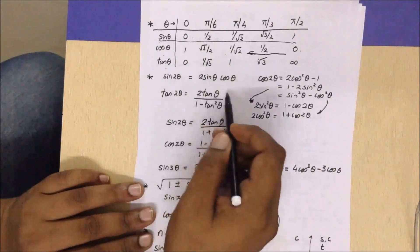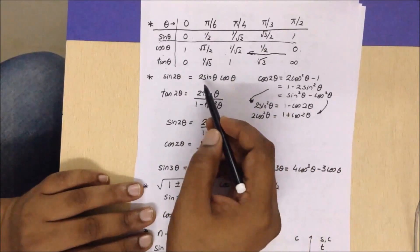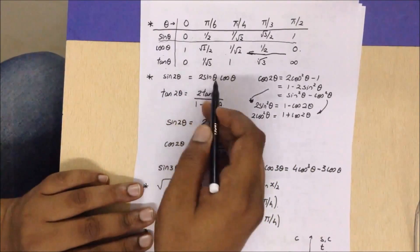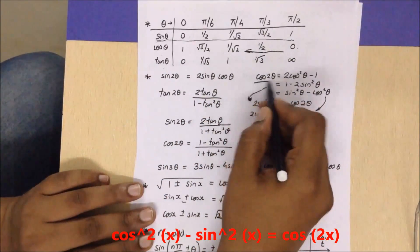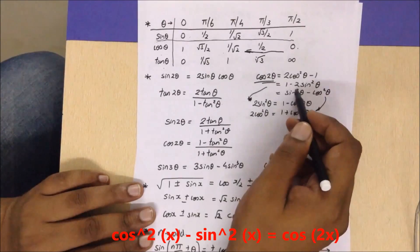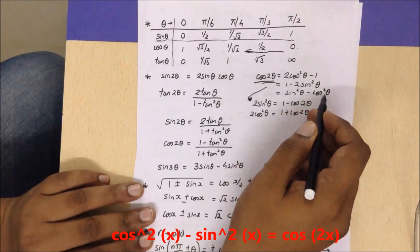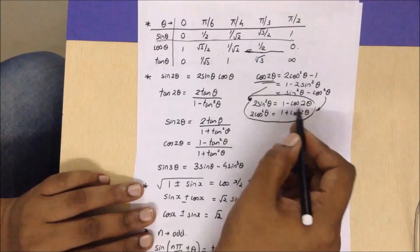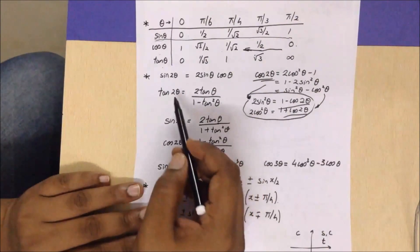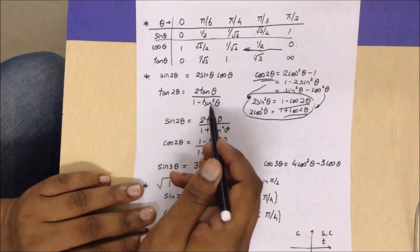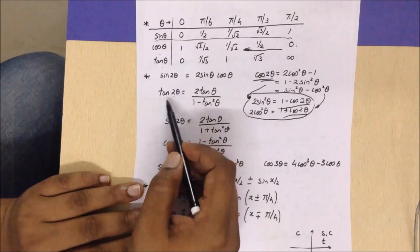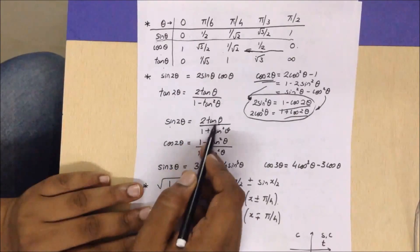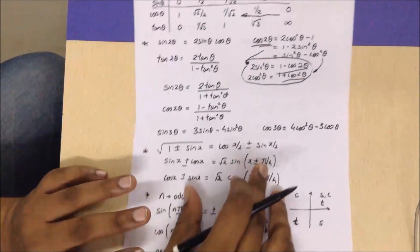These are the double angle formulas to recollect. They help in solving trigonometric equations and integration problems. sin(2θ) = 2sin(θ)cos(θ). cos(2θ) has three forms: 2cos²(θ) - 1, 1 - 2sin²(θ), and cos²(θ) - sin²(θ). These are used to replace sin² or cos² terms inside integration. Also, tan(2θ) = 2tan(θ)/(1 - tan²θ), sin(2θ) = 2tan(θ)/(1 + tan²θ), and cos(2θ) = (1 - tan²θ)/(1 + tan²θ).